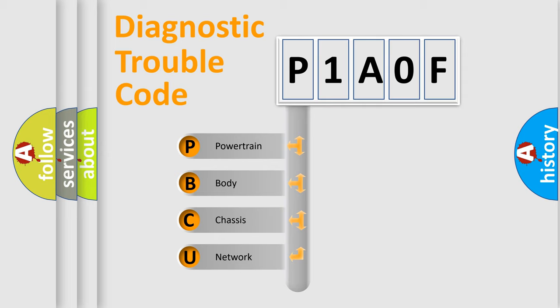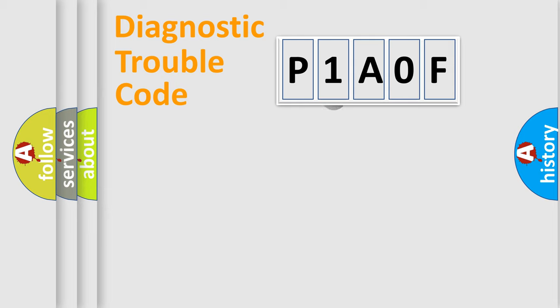We divide the electric system of automobile into four basic units: Powertrain, body, chassis, and network. This distribution is defined in the first character code.